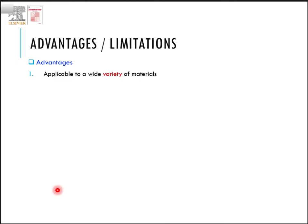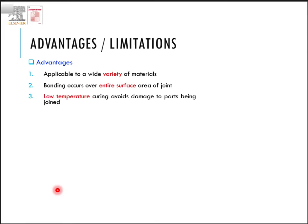The advantages and disadvantages of adhesive bonding: adhesive bonding has the advantage that numerous parts or components can be joined and assembled using a wide variety of available adhesives. It sometimes involves low temperature, so you don't need to heat the material to very high temperatures, and low-temperature curing can avoid damage to the parts being joined. Adhesion is also used to seal, as well as to reduce vibration or corrosion.